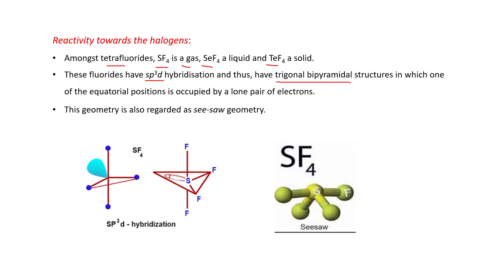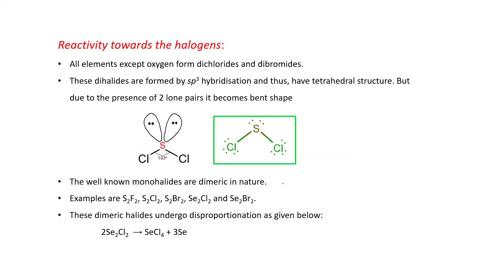But in this case, four bond pairs and one lone pair are there. This lone pair of electrons occupies the equatorial position. That's why its geometry is regarded as see-saw. You can see this is SF4 with sp3d hybridization. But this is one lone pair of electron. This is see-saw geometry.